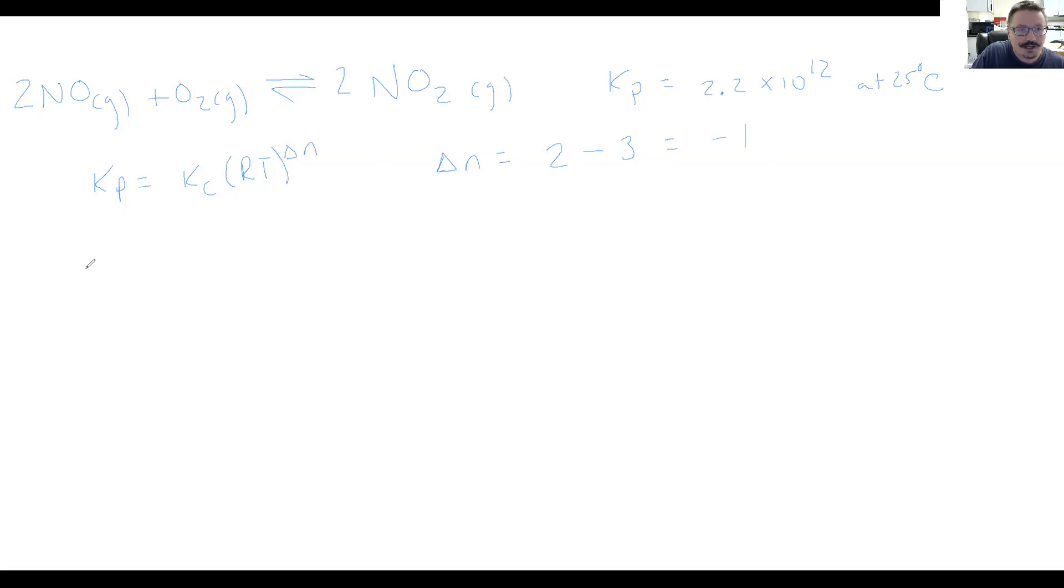So we have K sub P equals K sub C. And then we have R, the ideal gas constant, 0.08206 liters atmospheres per mole Kelvin. And that's going to be times our temperature, which was 25 degrees C, which is 298 K. And that's raised to the negative one.